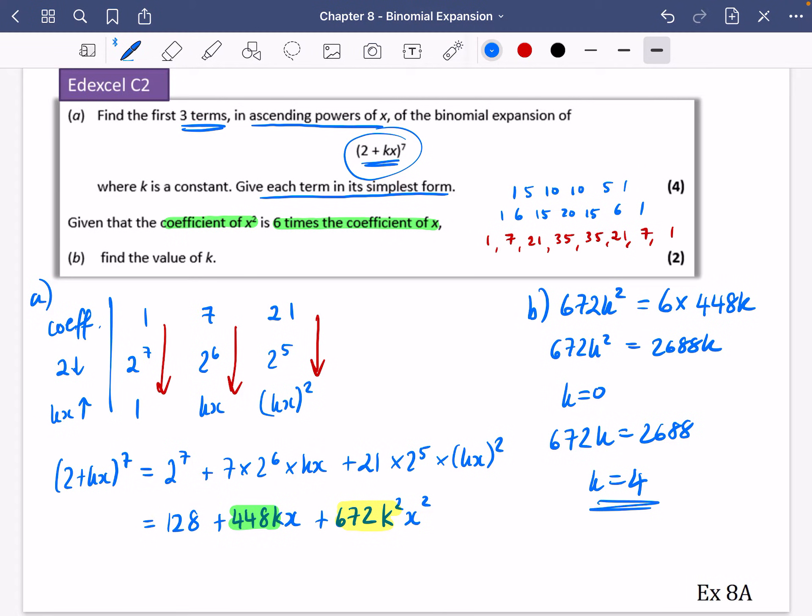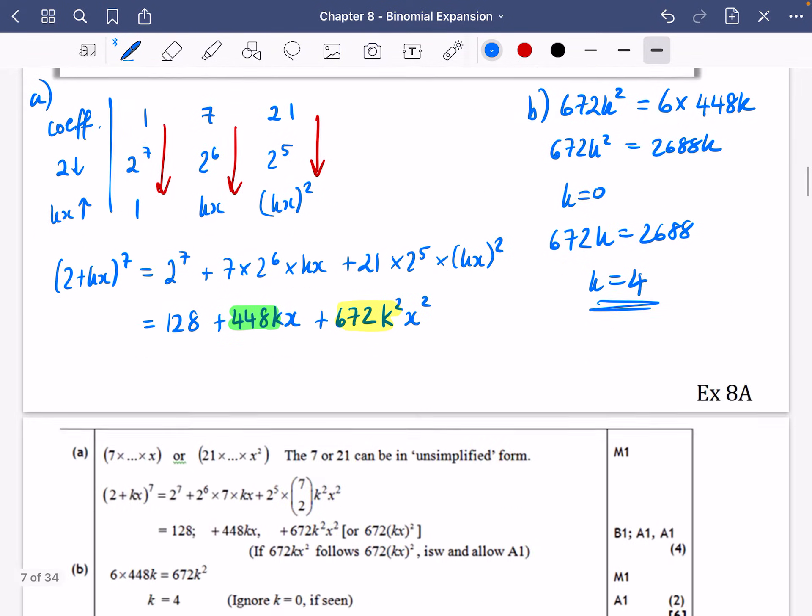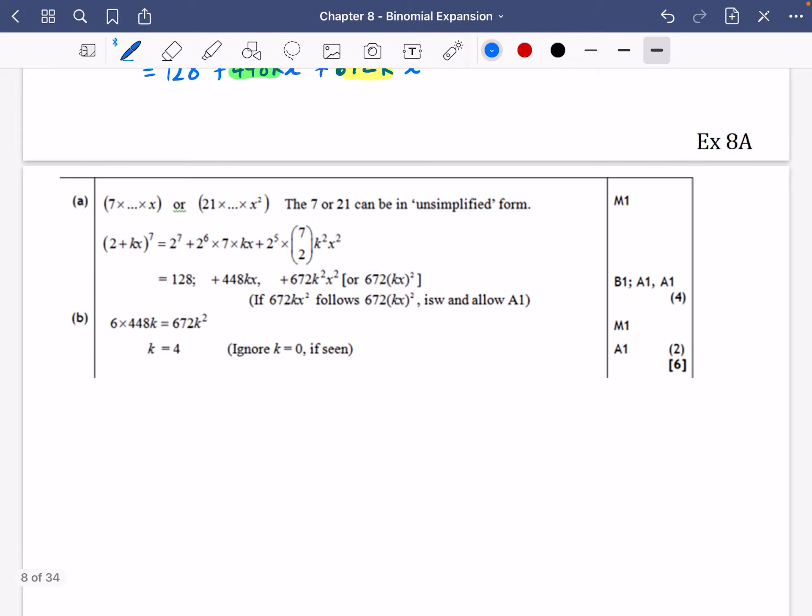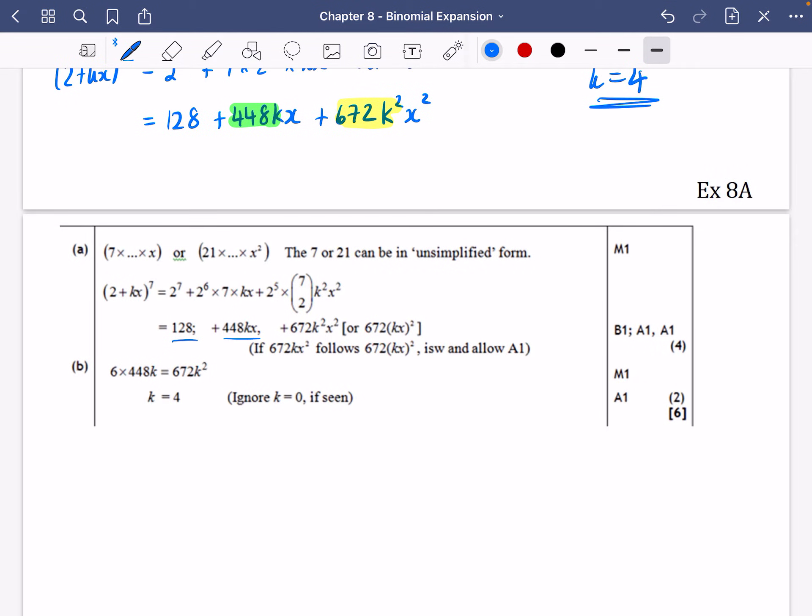So although k sort of is an answer. It does say that k is a constant. It probably should say that k is a positive constant. Which would tell us we're not really talking about 0 there. And I'm just going to compare it to the mark scheme and see if we got this correct. So we did get 128, 448k at 672k squared x squared. That's great. And then it does say here ignore k equals 0 scene. Because you don't really need it. We get the answer that k is equal to 4.